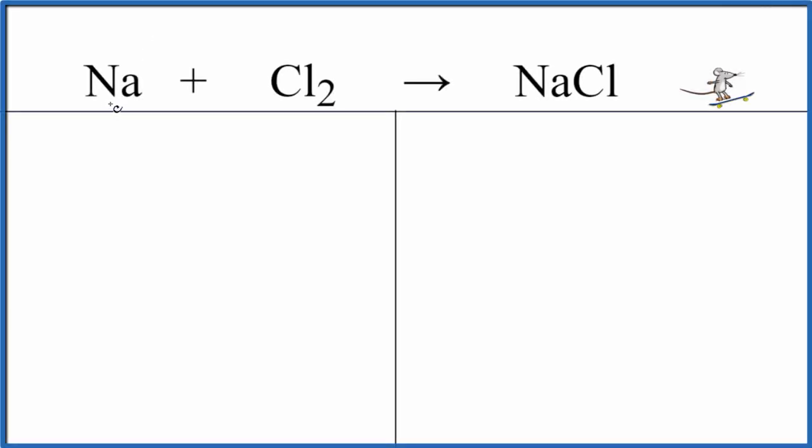So hopefully when you balance the equation Na plus Cl2 yields NaCl, you end up with something like this here. You could put a 1 here, we don't usually write it though. So that's the balanced equation for Na plus Cl2 yields NaCl, but I want to show you how I got there, kind of my thinking about how I balance equations.